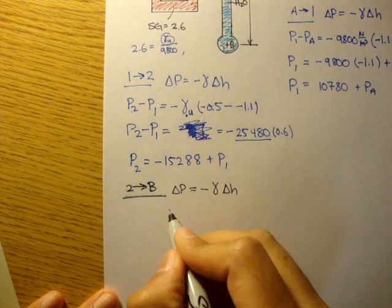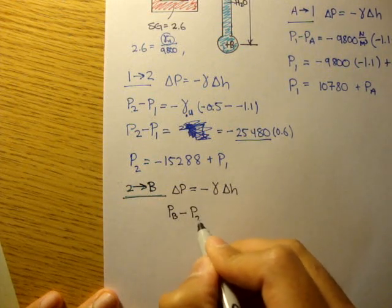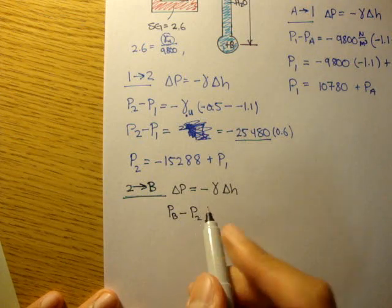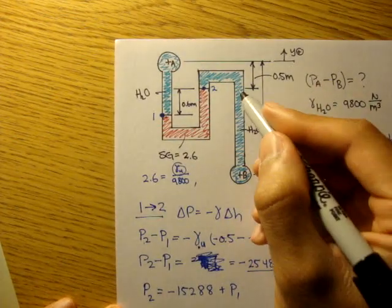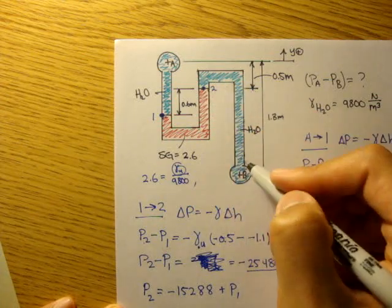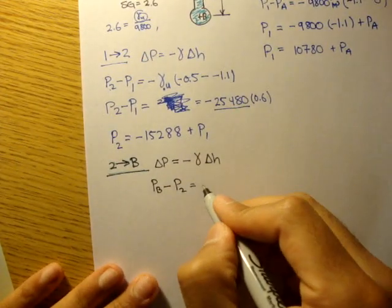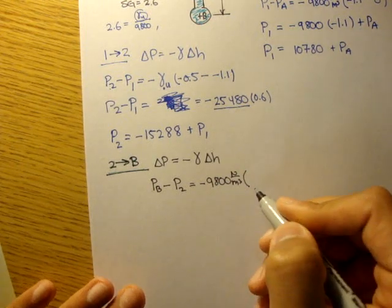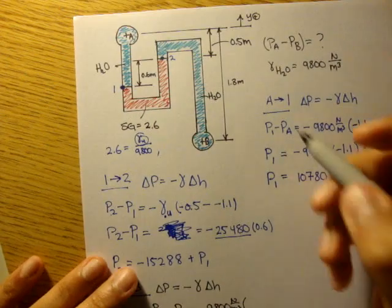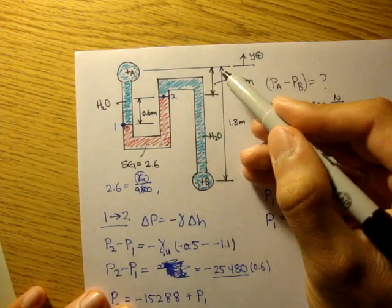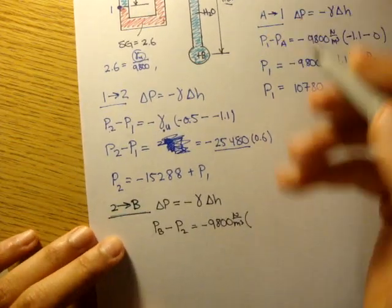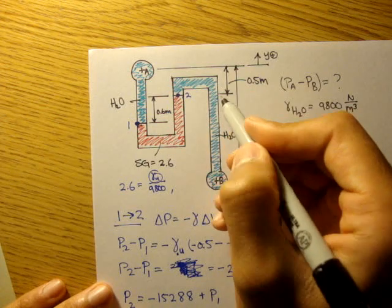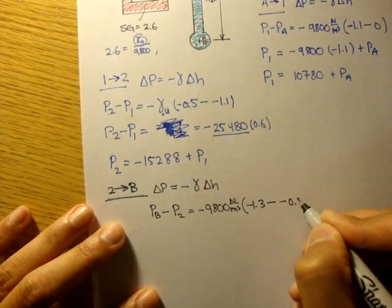So we'll do our final minus our initial, from 2 to B. So P_B minus P_2 equals, we're in water now, so we'll do gamma of water, which is negative 9,800 newtons per meter cubed, times our final distance from our datum, which is negative 1.3, minus our initial. So at point 2, we're at negative 0.5.